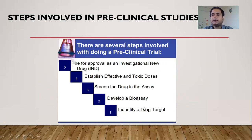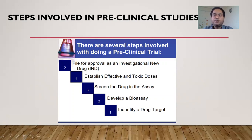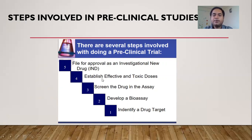The properties of the drug target — such as whether it is druggable or not — were discussed in the previous lecture. The drug target should be linked to a disease and have a major contribution in the pathophysiology of that disease. In the second step, we develop a bioassay to screen and validate our drug target. In the third step, we screen the drug in the assay. In the fourth step, we establish the effective and toxic dosage of the drug or lead molecules. After validating toxicity and pharmacokinetic data, if the drug is effective and less toxic, we file the IND.